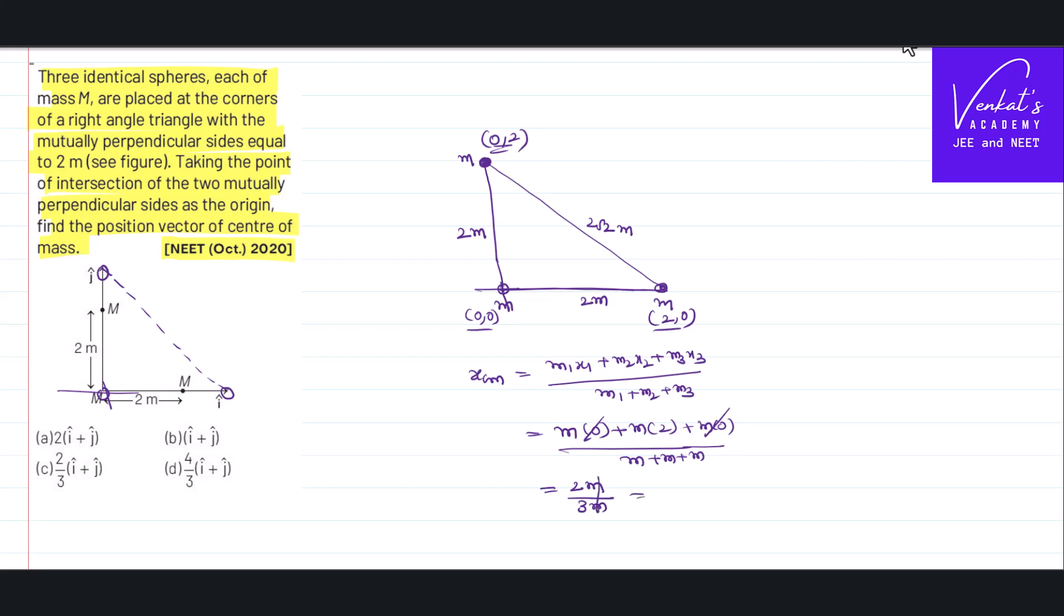Similarly I can calculate y_cm using the formula m1·y1 plus m2·y2 plus m3·y3 divided by m1 plus m2 plus m3. m1 is m, y1 is 0 because that is treated as the origin. m2 is m, y2 is 0 because that is on the x-axis. m3 is m, y3 is 2 because that is on the y-axis, divided by 3m. Again, 2m by 3m, that is 2/3.